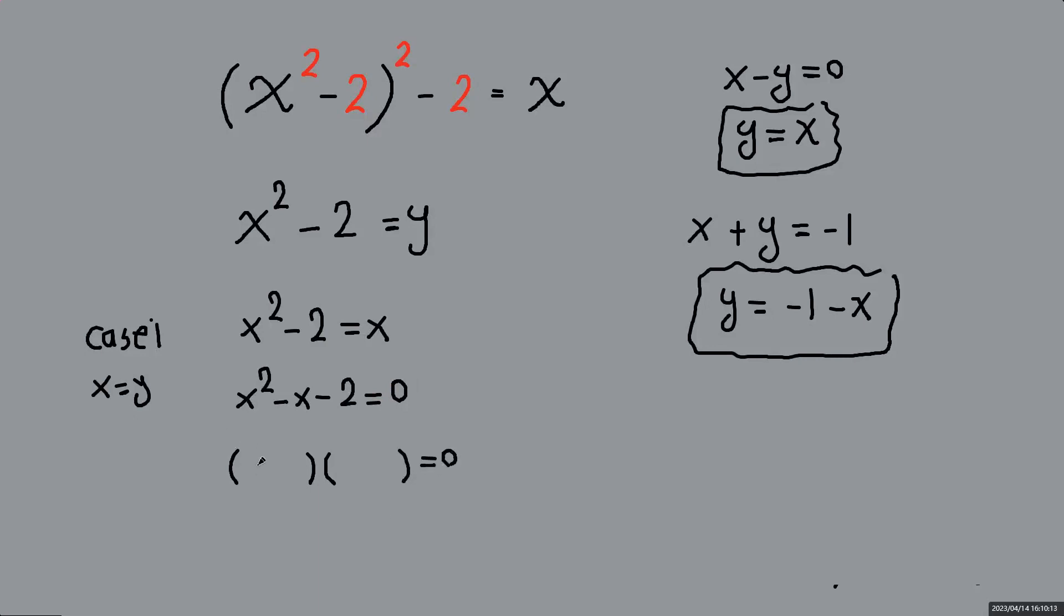So x squared minus x minus 2 equals 0. So let's write it as product of two things equals 0. To get x squared, we're going to have x times x. So we want a number that the product of them are negative 2 and sum of them is negative 1. Maybe 2 times negative 1 or maybe negative 2 times 1. The sum of negative 2 and 1 is negative 1. So I'm going to go with this.